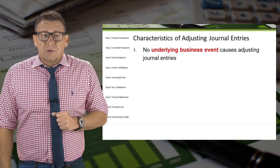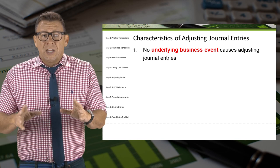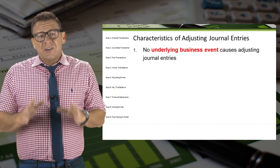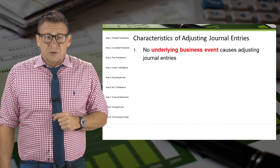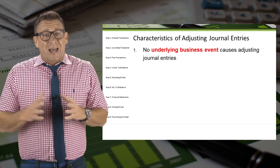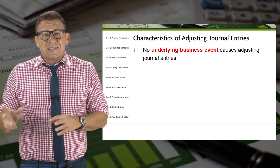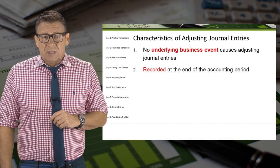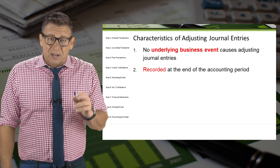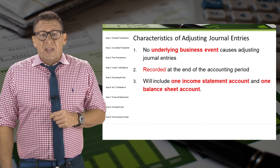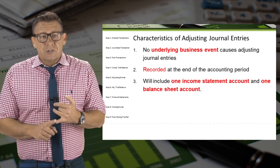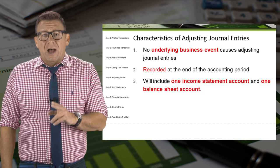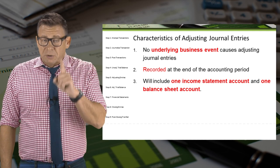Finally, let's look at some characteristics of an adjusting entry and how they differ from a regular journal entry made in the ordinary course of business. First, there is no underlying business event that causes an adjusting entry to happen. They happen most often because of the passage of time or because information isn't available in the period we need it. They are recorded at the end of the accounting period. They will always include one income statement account and one balance sheet account — this requires some critical thinking, but you can usually figure out the accounts affected by remembering this.